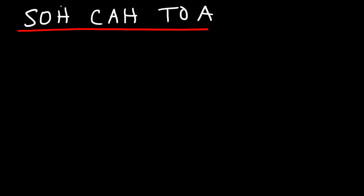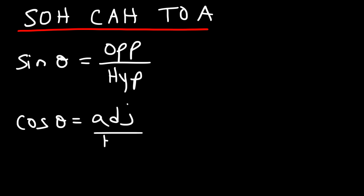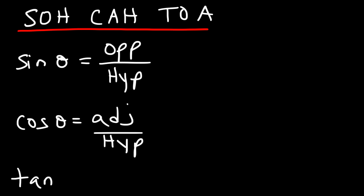SOH tells you that sine of some angle theta is equal to the opposite side divided by the hypotenuse. CAH: cosine is equal to the adjacent side divided by the hypotenuse. And TOA tells us that the tangent ratio is equal to the opposite side divided by the adjacent side.